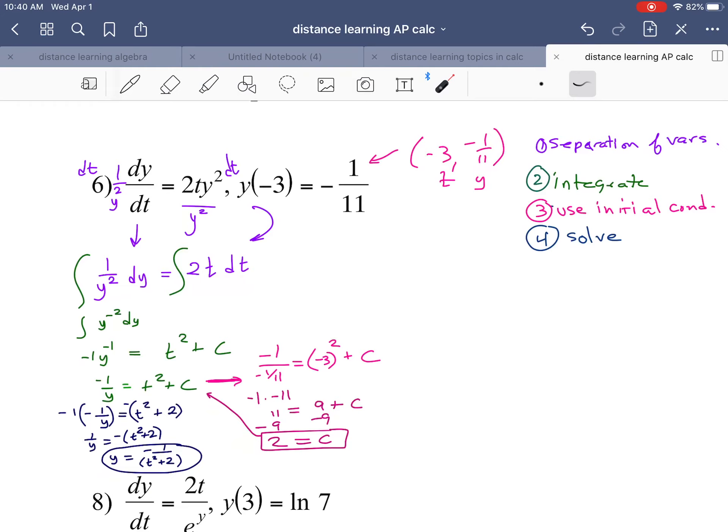Next we integrate. Integrating each side, 2t becomes t squared plus c. I'll need one constant. Then I have 1 over y squared, which is the same as y to the negative 2. I use power rule for antiderivatives here and I've rewritten that as negative 1 over y.